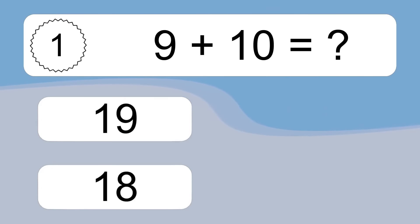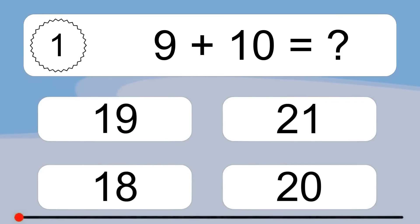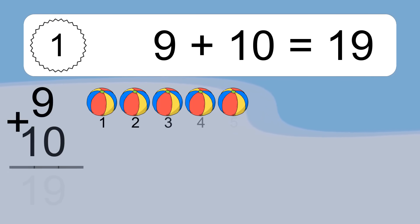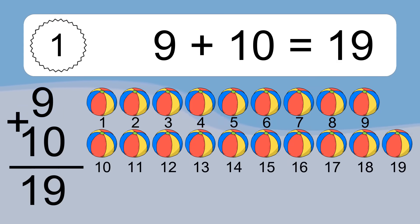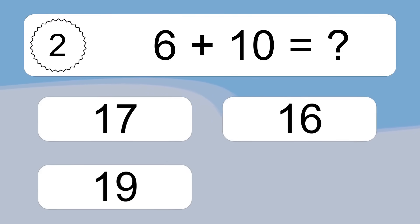9 plus 10 equals what? 9 plus 10 equals 19. Let's count it: 1, 2, 3, 4, 5, 6, 7, 8, 9, 10, 11, 12, 13, 14, 15, 16, 17, 18, 19.